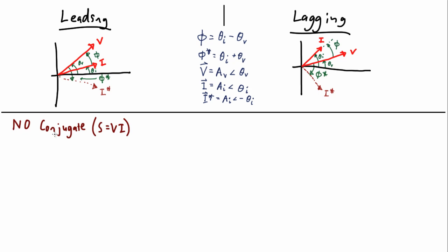These variables apply to both leading and lagging scenarios. Now, pay attention to the angle terms. Remember, what we want in the end is the difference between the angles of the original phasors, not the conjugate phasors.